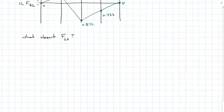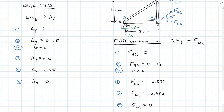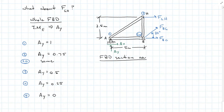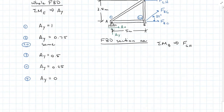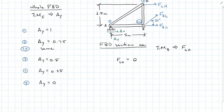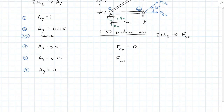What about force GH — the horizontal member just above the diagonal member BG? As the unit load moves from left to right, A_Y doesn't change. To get force GH isolated on the same section, we sum moments about B. When the unit load is at A, force GH is equal to 0. When the unit load is at H, force GH is equal to negative 1.07. When the unit load is at 2A, it doesn't change. When the unit load moves over another five meters to joint G, force GH is negative 0.714.